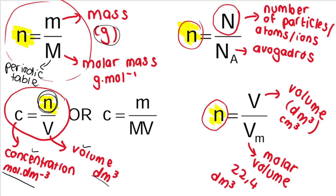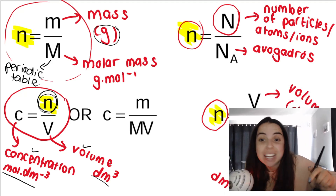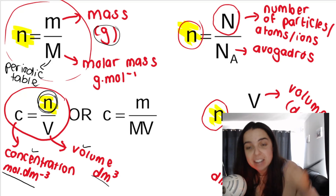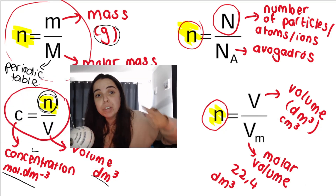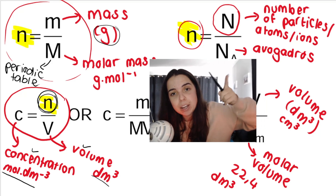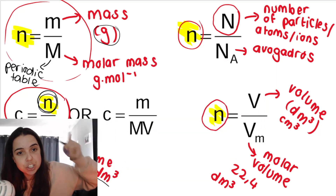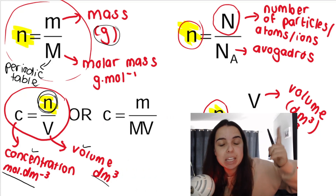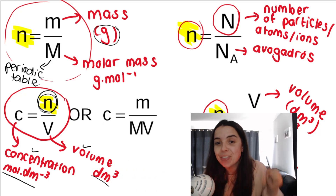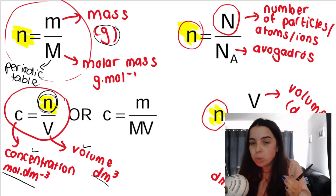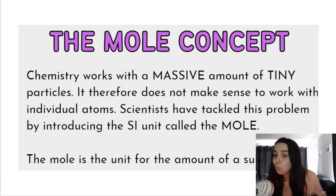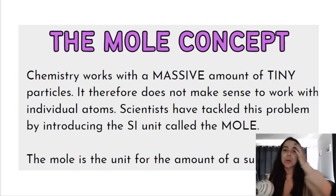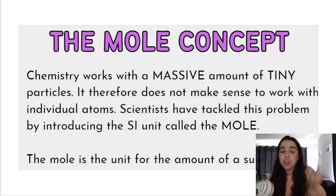I have videos on every single one of these formulae in this stoichiometry playlist — the quantitative aspects of chemical change playlist. So if you want a video on how to calculate moles using mass, Avogadro's number, concentration and solutions, or gases at STP, all of those videos are in this playlist — check the link below. Most importantly, these formulae are used to calculate number of moles, and chemists work with a massive number of atoms, so they use the mole.